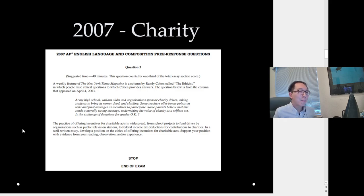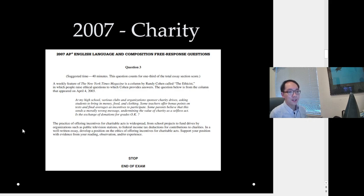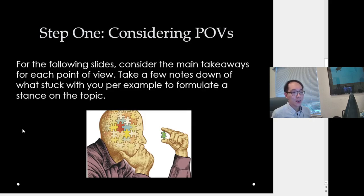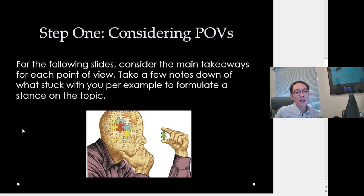The actual argument task is: develop a position on the ethics of offering incentives for charitable acts and support your position with evidence from your reading, observation, and experience. The key question — if you do charity and get something back, does that defeat the purpose? Doesn't that kind of undermine grading and school itself, that you can pay to win your grade? It's up to you to argue that.